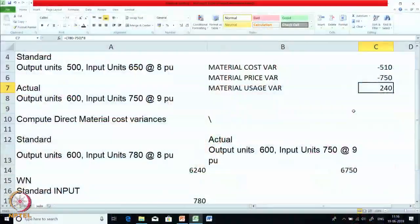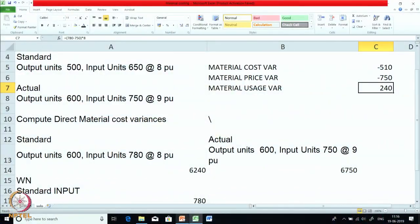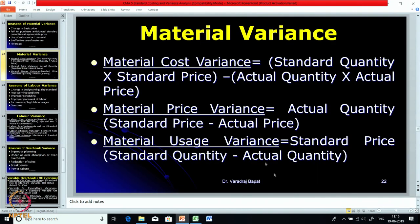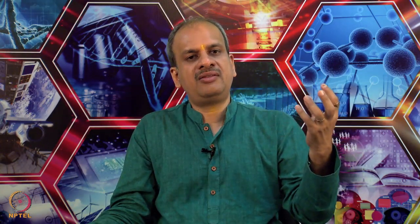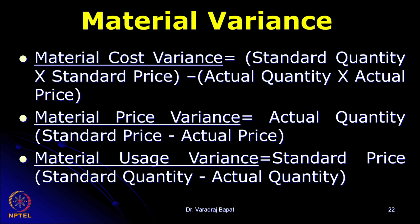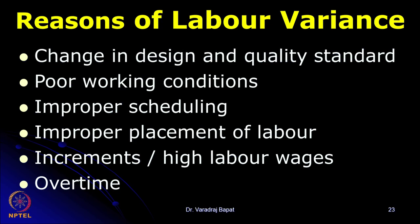Please review this again. We will also be giving you some practice questions because similarly you are going to calculate for labor as well as variable overheads. Try to understand the concept correctly. Now we will discuss further on other types of variances — we have just discussed material variances and done one case on it. Now let us go to labor variances.